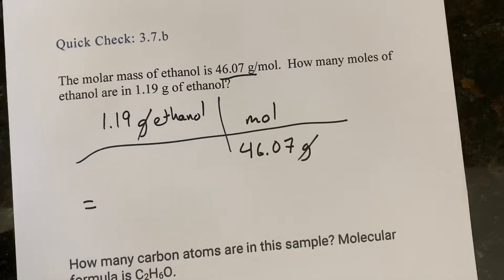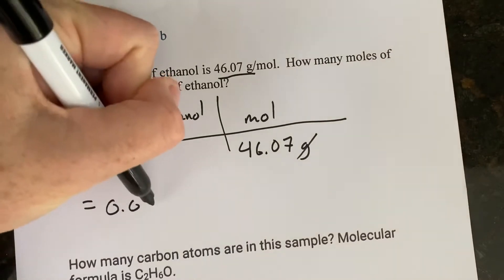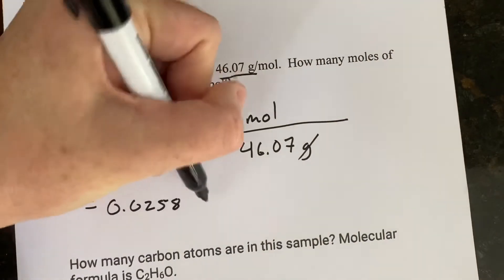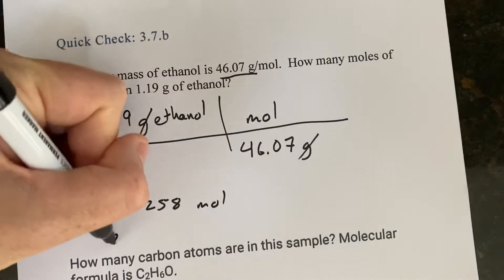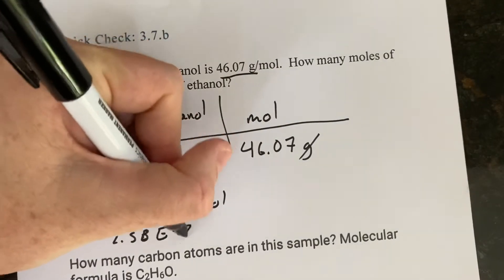So 1.9 divided by 46.07, or 1.19, excuse me, divided by 46.07, gives me an answer of 0.0258 mole, which you could also write 2.58 E negative 2, if you want to.